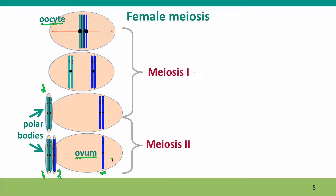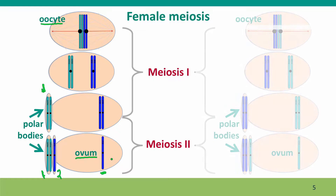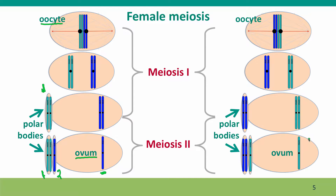This creates a further complication when we think about the products of meiosis genetically. Consider another meiosis in which the chromosomes lined up differently — in this case, the light-colored one is on the right-hand side. Now the first polar body gets the dark blue chromosomes, so the single ovum actually has a different genotype than the first version of meiosis we showed.